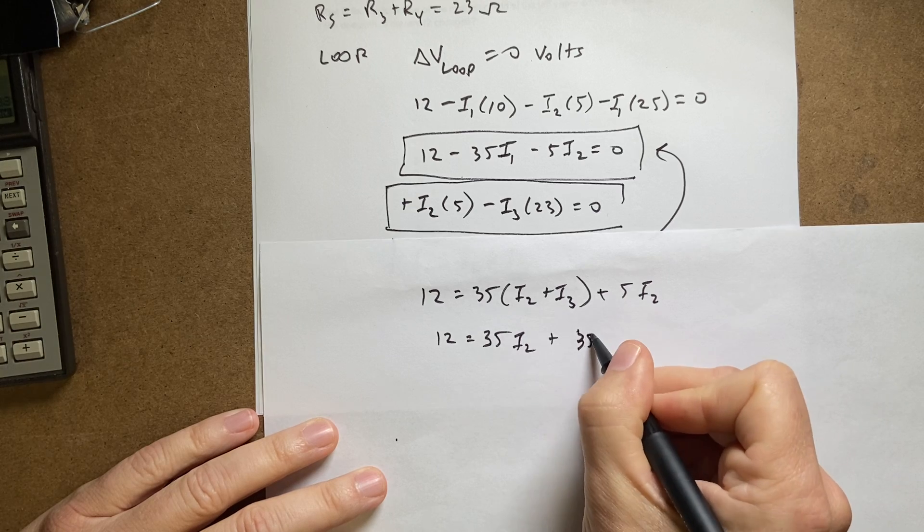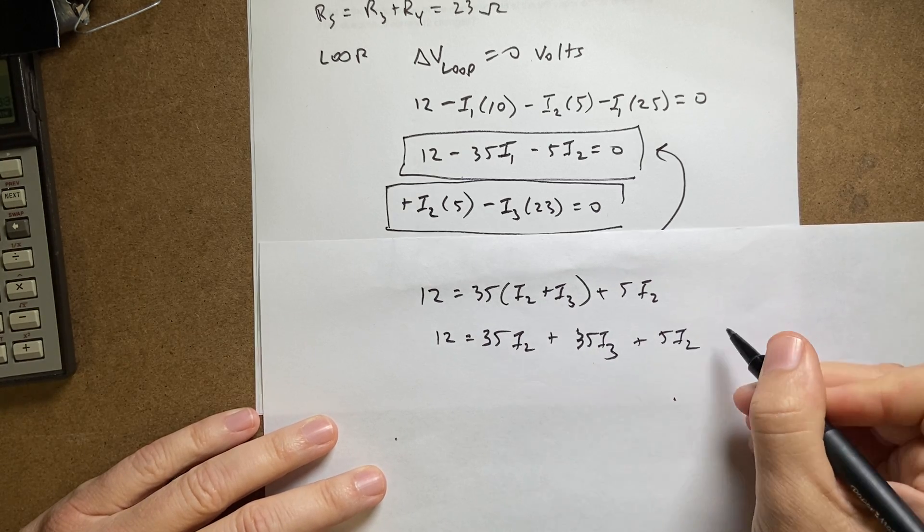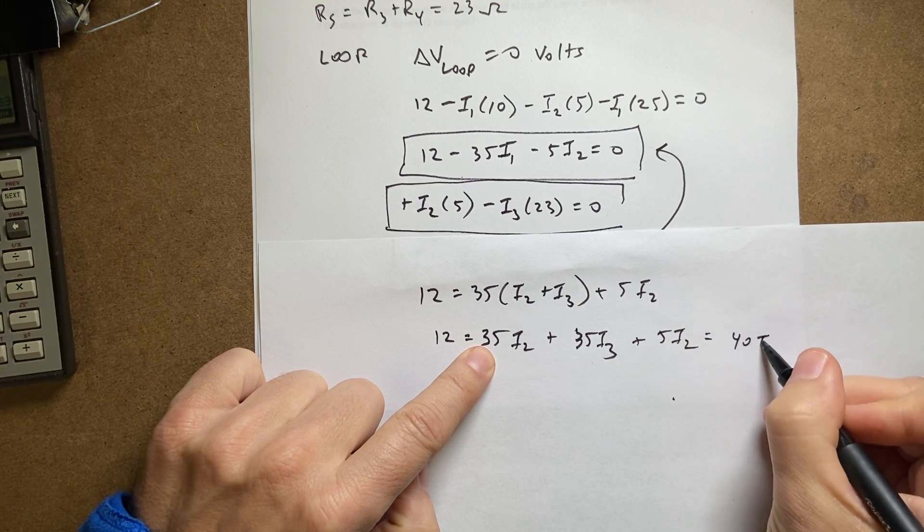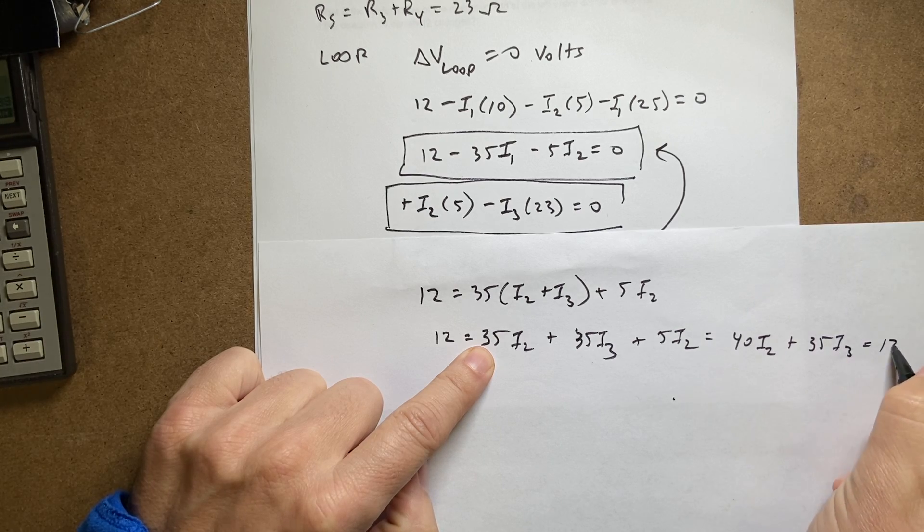So now let's multiply this out. I get 12 equals 35 i2 plus 35 i3 plus 5 i2, so that's going to be equal to—I have combined these two—I get 40 i2 plus 35 i3 equals 12.